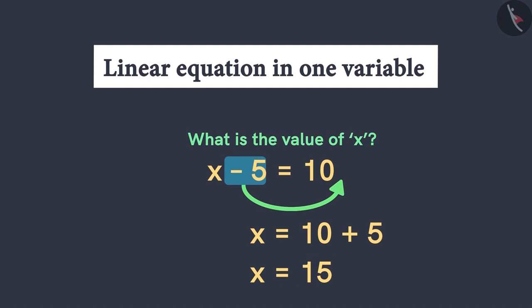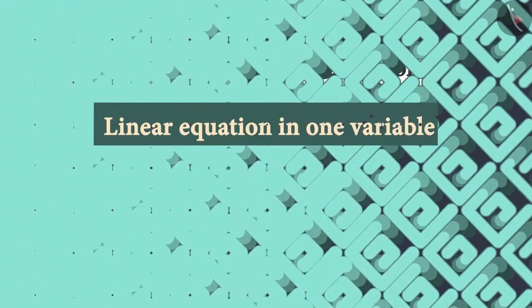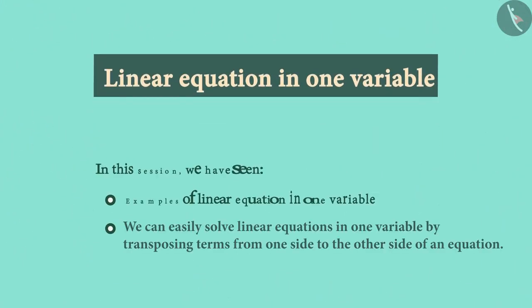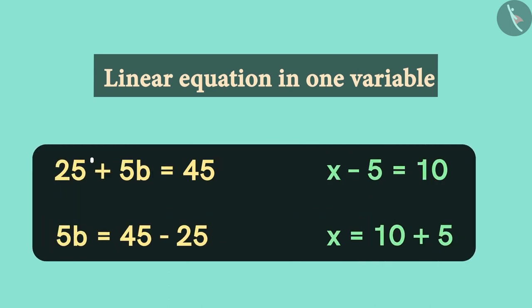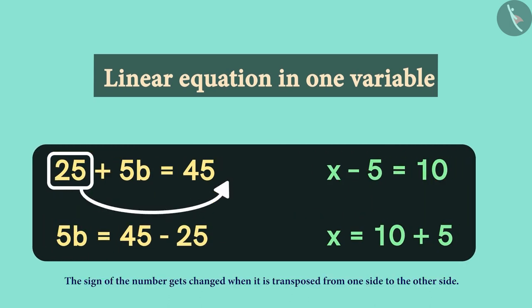So this efficient way will help us in further sessions to solve the equations swiftly. To conclude, in this session we saw that we can solve linear equations in one variable very easily and efficiently by transposing numbers to the other side. But always remember that while we transfer a number, we change its sign.